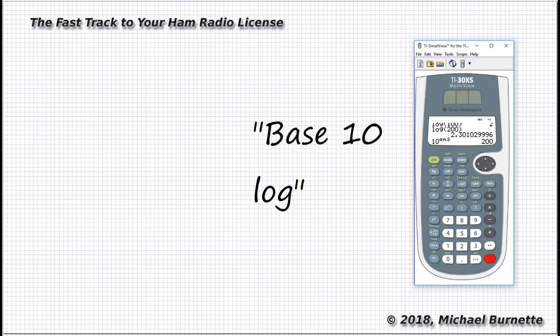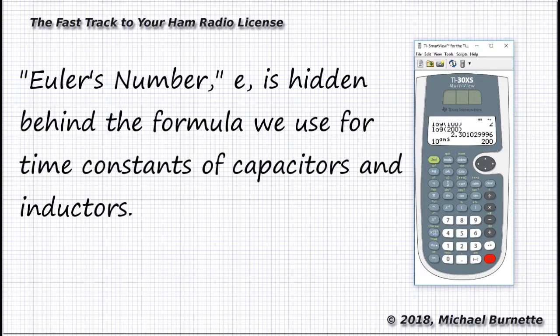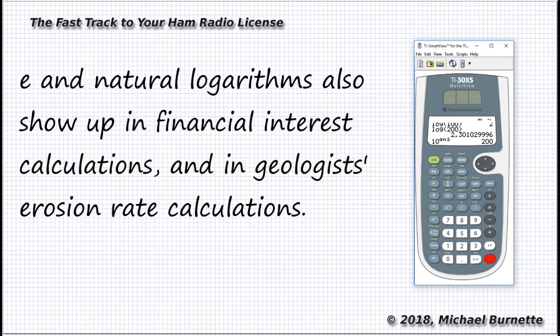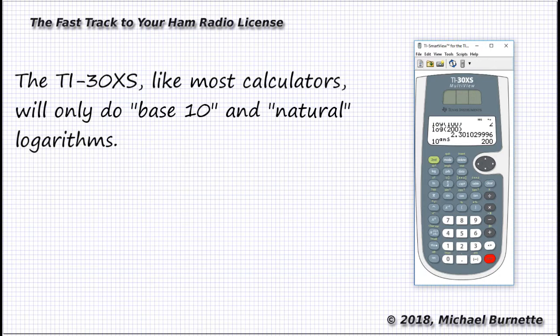Most common variations are base 2 logarithms, and logarithms of a particular irrational number called E for Euler's number, which is approximately equal to 2.718. Logarithms with a base of E are called natural logarithms, and they're really interesting. They show up in all kinds of sciences, from physics to geology to biology and more. For the exam, we won't be using anything but base 10 logarithms, and what we do with them is as simple as what you just did testing your calculator.